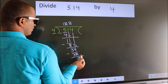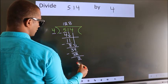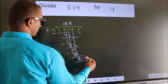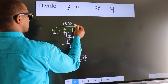No more numbers to bring it down. So, we stop here. This is our remainder. This is our quotient.